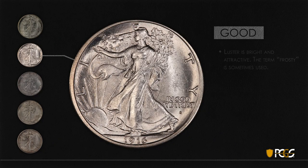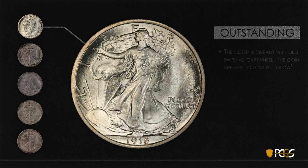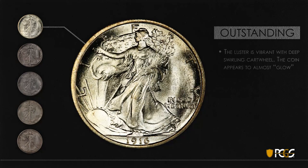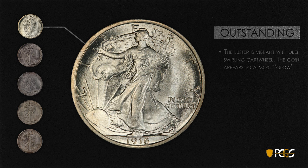Next we'll look at a coin with good luster — the luster is bright and attractive. You sometimes hear these coins referred to as frosty. The light and dark pattern is really starting to show up, and this is the kind of luster that's starting to help the grade of a coin. Finally, a coin with outstanding luster — the light and dark spots are very evident, and if you swirl the coin under the light, those areas change very quickly.